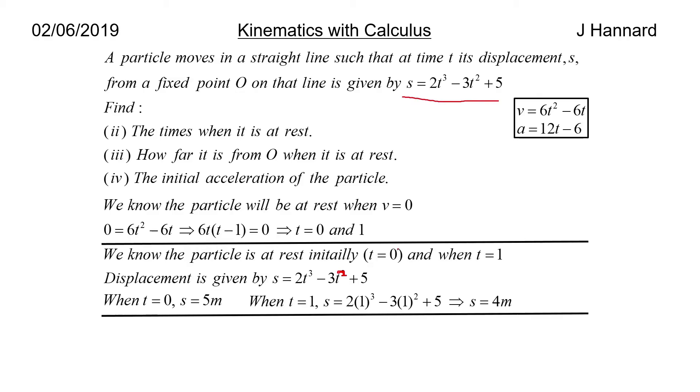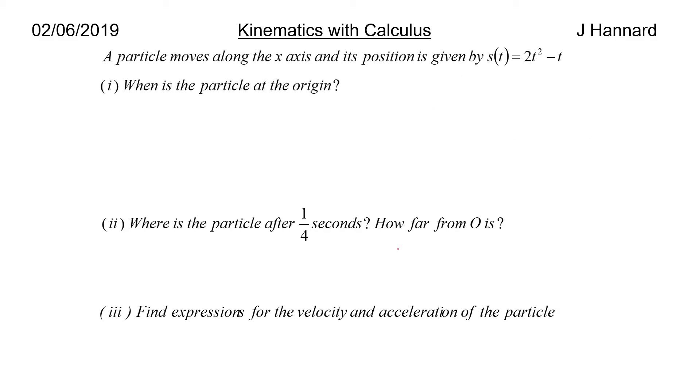Part four, the initial acceleration of the particle. So what does initial mean? That means when the time is at zero. So we set our acceleration formula t equal to zero and we get 12 times zero, which is zero minus six. So a = -6 meters per second squared. So that's the initial acceleration. There you go, easy peasy really if you want to think of it like that.